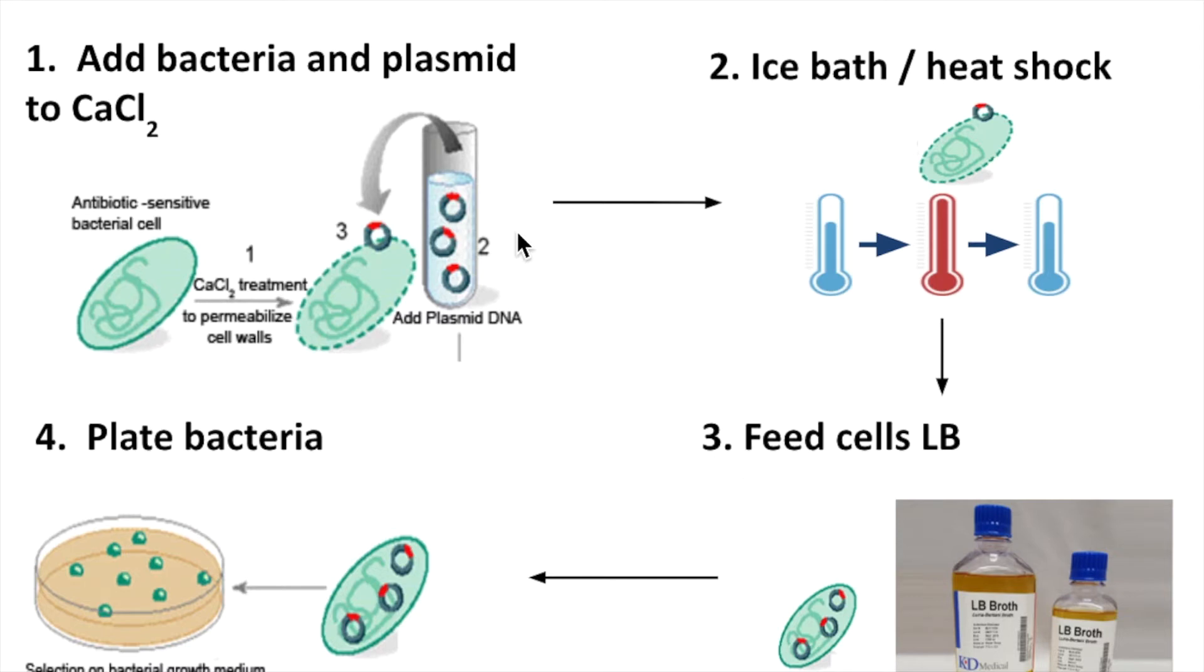Before we head on to part three, let's do a quick review of what this bacteria has gone through. We mentioned that we added it to calcium chloride, but we didn't talk too much about what calcium chloride does. It permeabilizes the outside of the cell membrane and cell walls of the bacteria. That means it's making little holes or creating small pores. Then we put those bacteria into an ice bath and then we did our 42 degree heat shock. So that bacteria has been through quite a bit. That's why in part three we're going to take care of them by feeding them with something called LB.